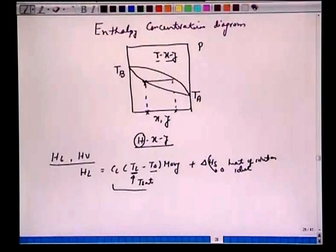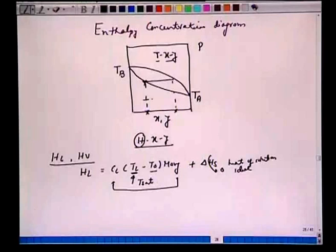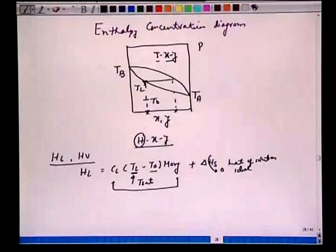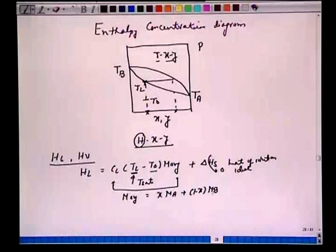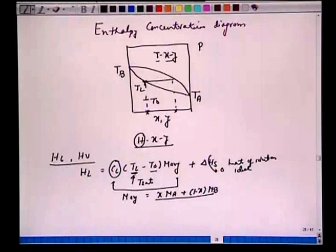Essentially, this is sensible heat: we heat this fluid from some reference temperature T_0 all the way to T_L. So H_L equals C_L times (T_L minus T_0) times M_average, where M_average equals x·M_A plus (1 minus x)·M_B — a weighted average. The enthalpy of the saturated liquid is the specific heat of the liquid C_L multiplied by (T_L minus T_0) multiplied by the average molecular weight, neglecting the heat of solution for ideal mixtures.